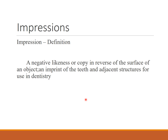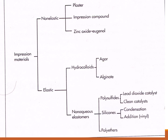An impression is defined as a negative likeness or copy in reverse of the surface of an object — an imprint of the teeth and adjacent structures for use in dentistry. Impression materials are non-elastic and elastic. Non-elastic types include impression compound and zinc oxide eugenol. Elastic types include agar, alginate, and non-aqueous elastomers. For FPD, we use silicones — condensation and addition type — and vinyl siloxane polyethers, with addition silicones most commonly used.